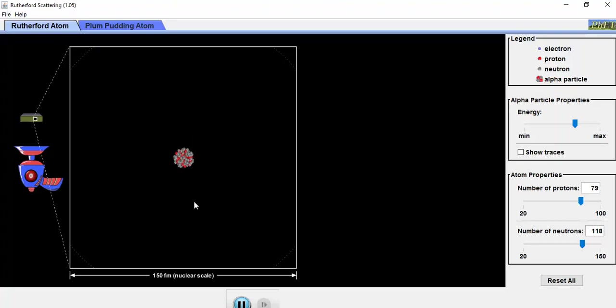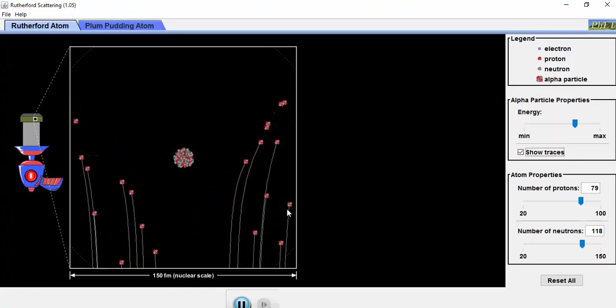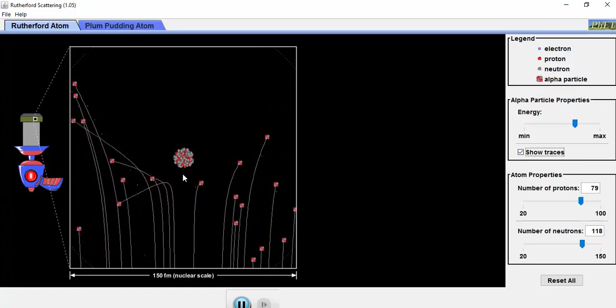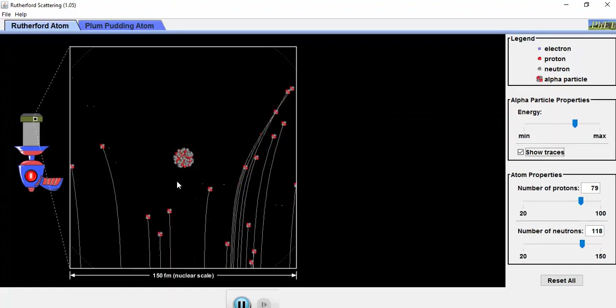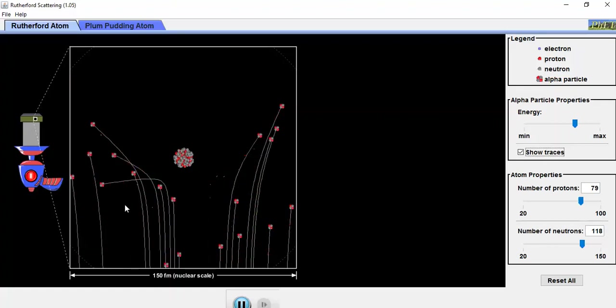If I fire these particles with the trace on, you can see these particles get bent, they get deflected. If one comes straight in close, it bends around and starts heading back.